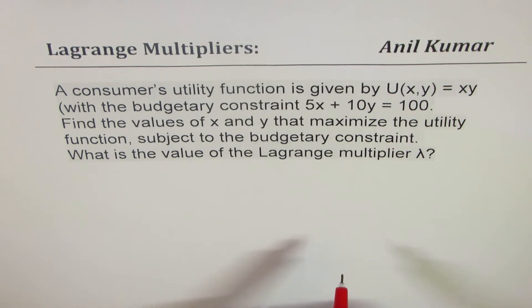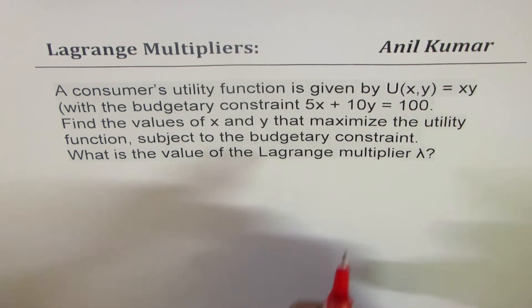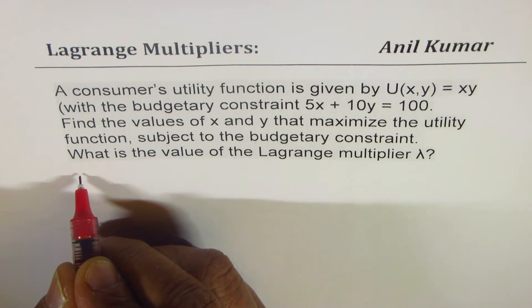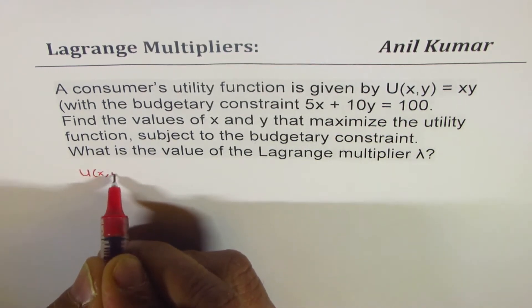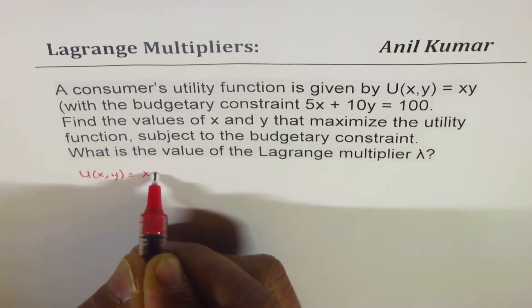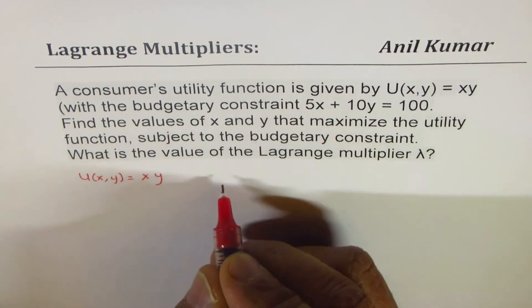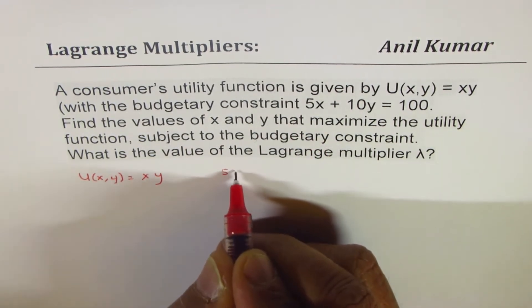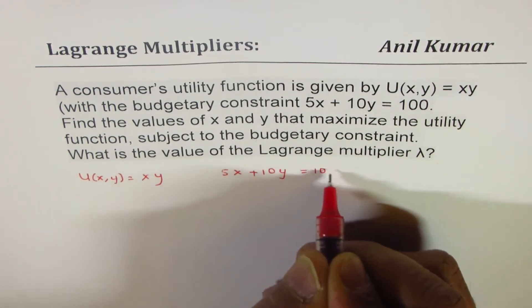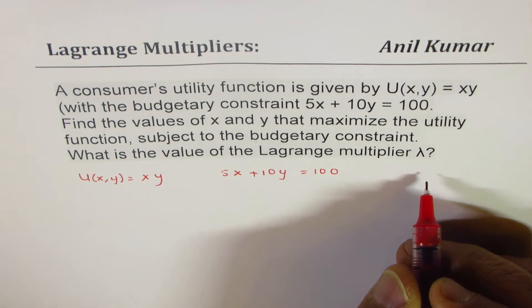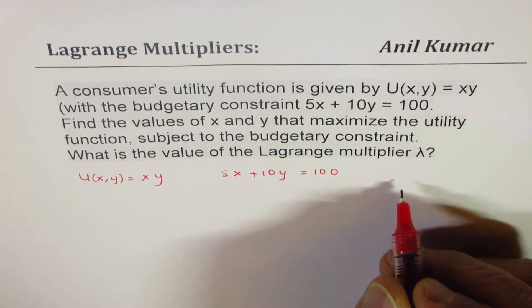So that's the question for us. To begin with, let's write down the utility function here, which is U(x,y) equals xy. Then we have a constraint. So the constraint is 5x plus 10y equals 100. And then here we can write the Lagrange's equation.